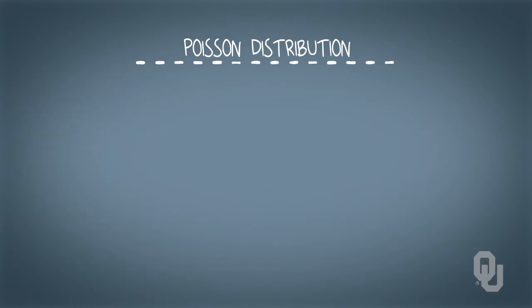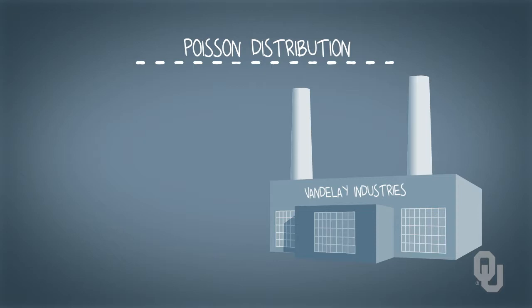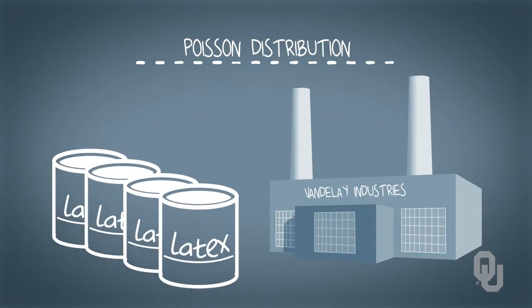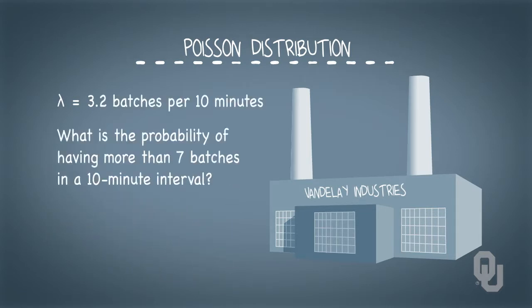Say you're a machine operator at Vandalay Industries, a company that manufactures latex. Say that latex stock arrives at your workstation at an average of 3.2 batches every 10 minutes. What is the probability of having more than 7 batches in a 10 minute interval?